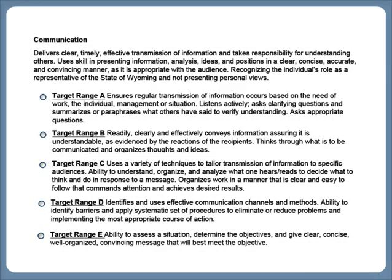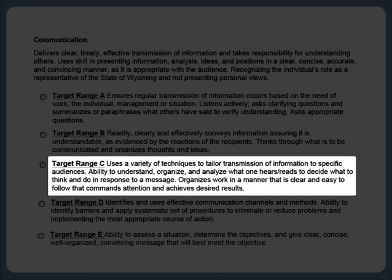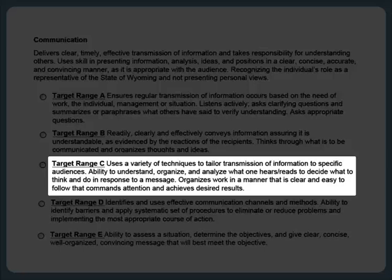Let's take a look at target range C next. Target range C represents an intermediate level of competence. A position set to this target range for communication requires that an employee uses a variety of techniques to tailor transmission of information to specific audiences. Understands, organizes, and analyzes what one hears and reads to decide what to think and do in response to a message. Organizes work in a manner that is clear and easy to follow, commands attention, and achieves desired results. This target range does not fit Blue and Orange's job duties, because their daily work is focused in structured computer databases, and they don't need to utilize a variety of communication strategies or tailor their communication to various audiences.